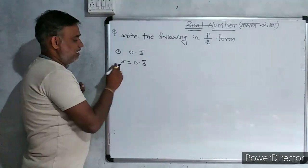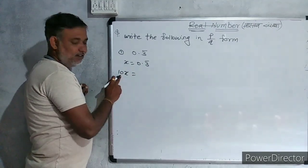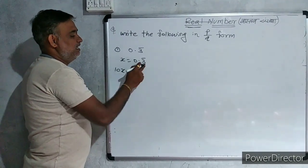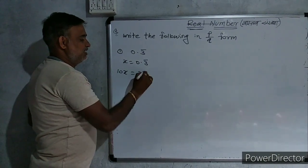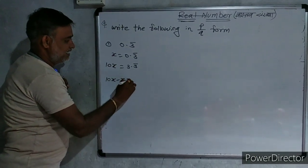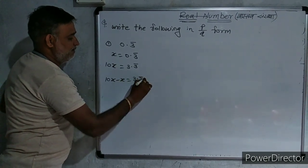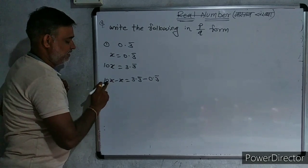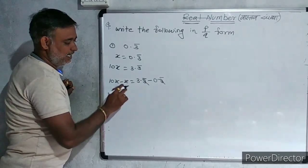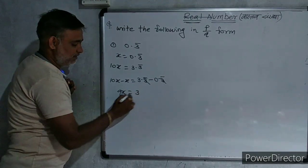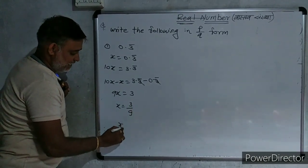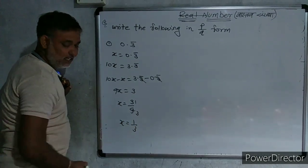Only one number is there. Therefore, we have to multiply by 10x. If 2 are there, 100x. If 3 are there, 1000x. So it becomes 10x equals 3.3 bar. Now subtract x from 10x. We get 10x minus x equals 3.3 bar minus 0.3 bar. 3 bar minus 3 bar cancel. 10x minus x is 9x equals 3. So x equals 3 upon 9, which equals 1 upon 3.